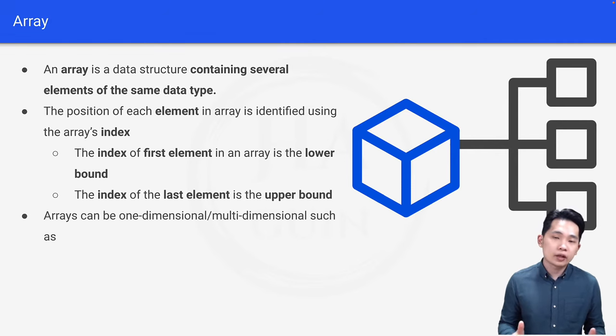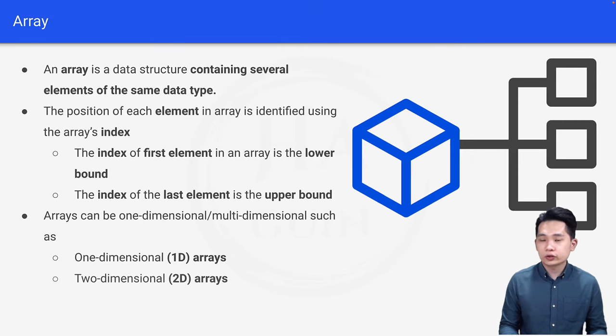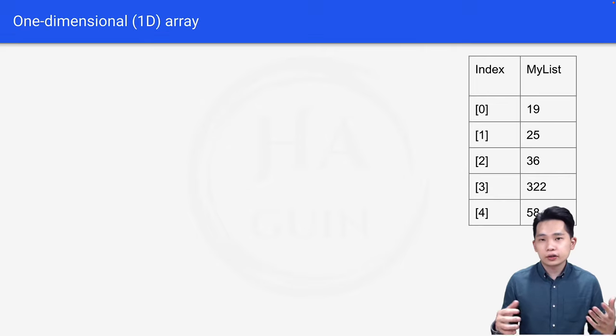Arrays can be one-dimensional or multi-dimensional such as one-dimensional (1D) array, two-dimensional (2D) array, and we have 3D array, 4D array, etc. Now let's look at 1D array.